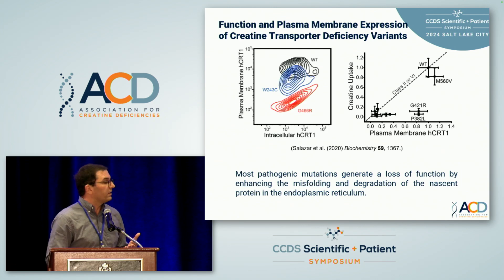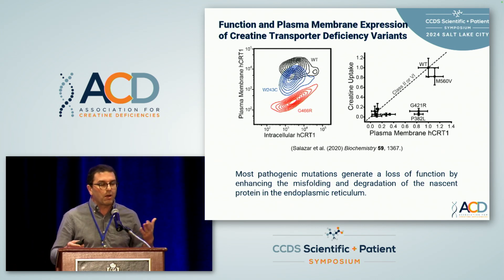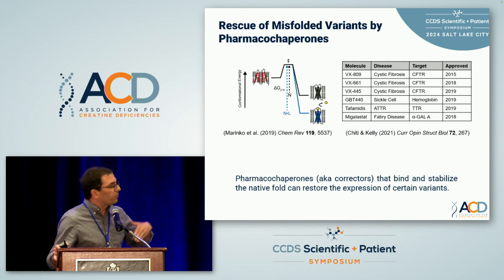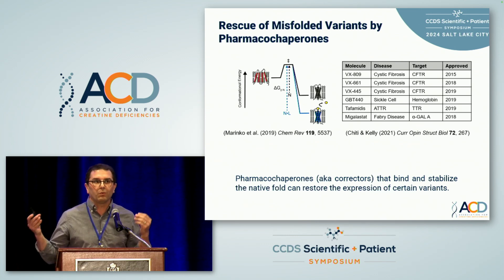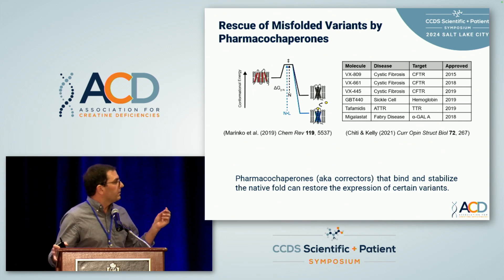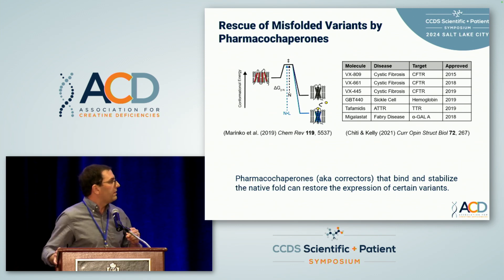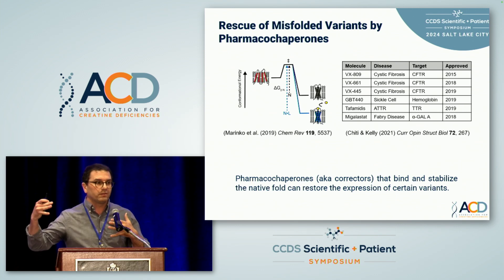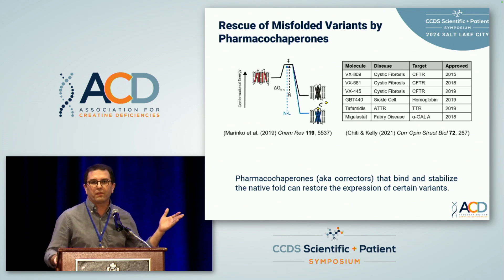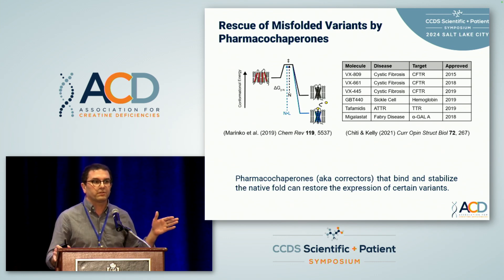Up to 80% of pathogenic variants across all genetic diseases probably involve some kind of folding defect. We want to find a way to basically improve the trafficking efficiency, which means we need to find a way to stabilize the native fold of the protein. It turns out that some small molecules when they bind to a protein and stay there for a long time can actually stabilize the native fold. These are a bunch of drugs that Vertex came out with in the last 10 years for cystic fibrosis, and this has really revolutionized cystic fibrosis research.